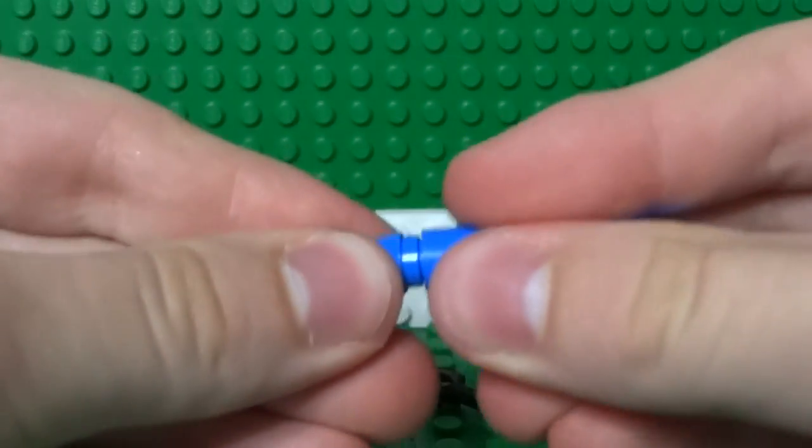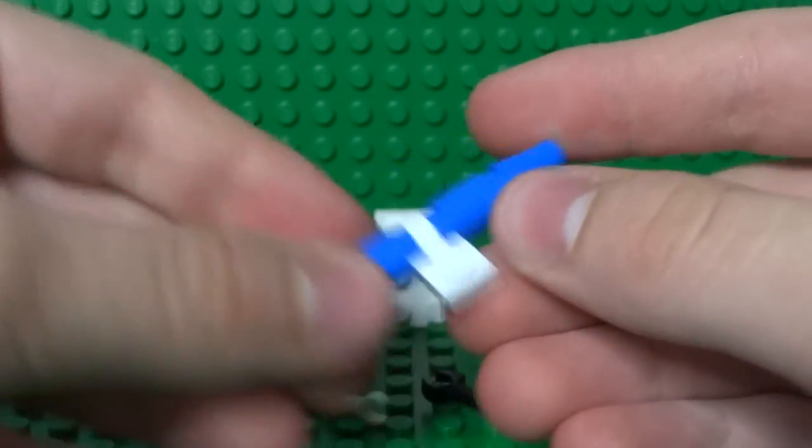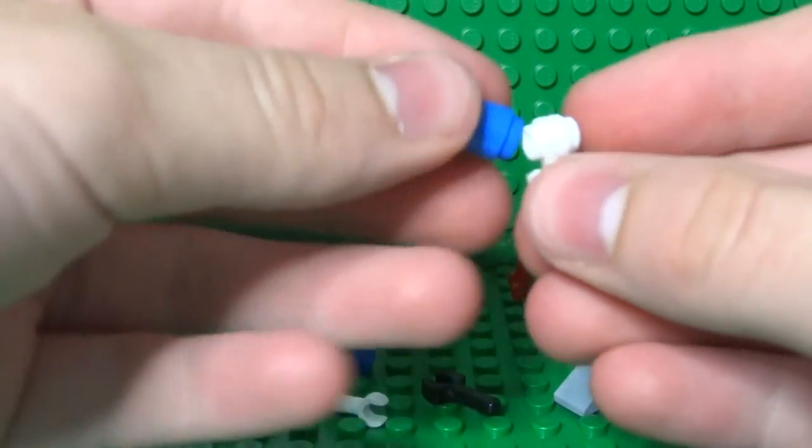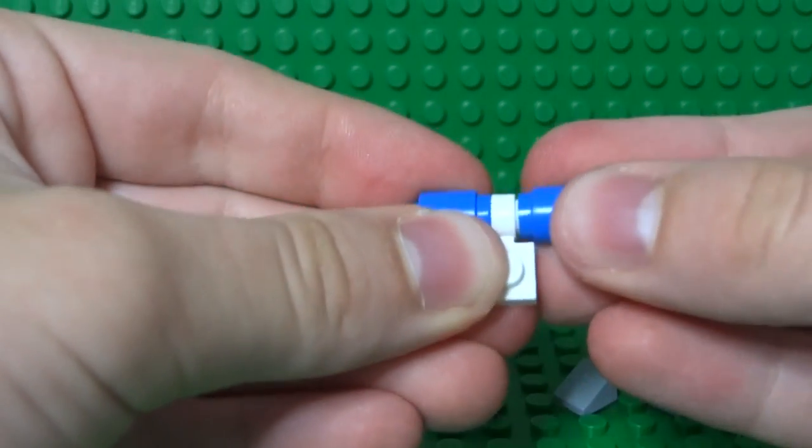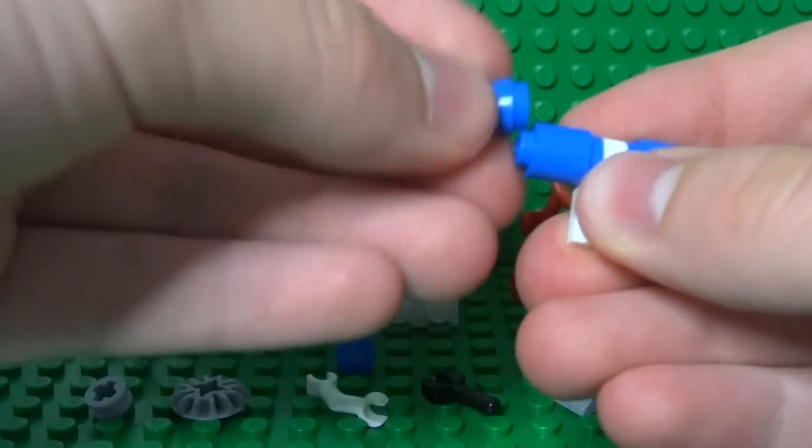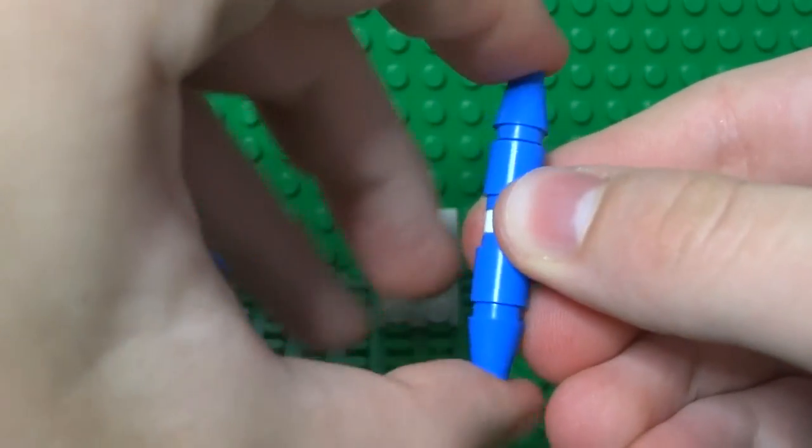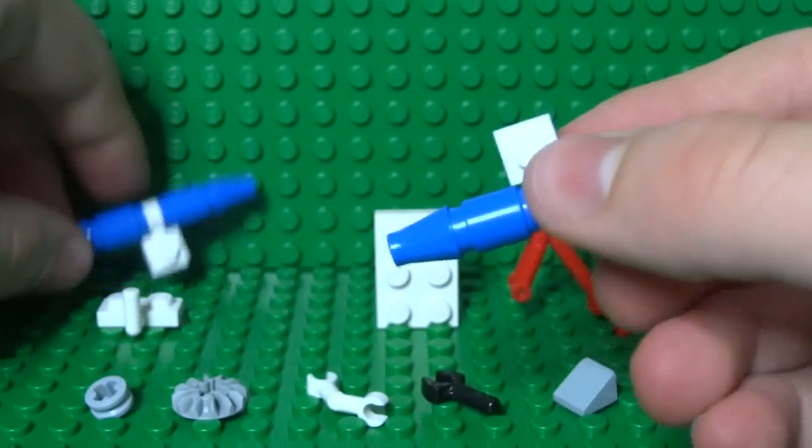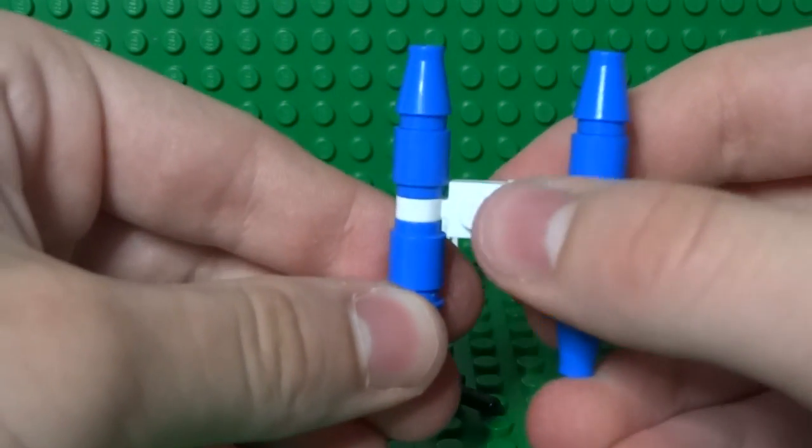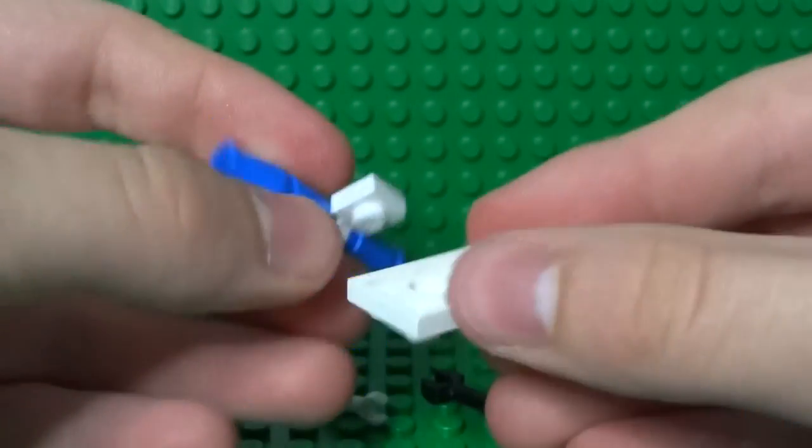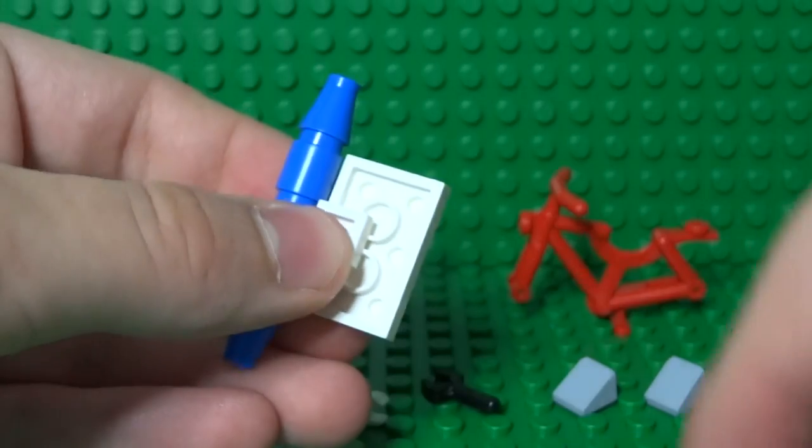And you do that with both sides, so you just attach the two round pieces and then the coin pieces. Now with your two floats you can attach these together with a two by three plate. I'll just put these in the middle with your plate just like that.